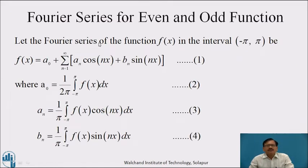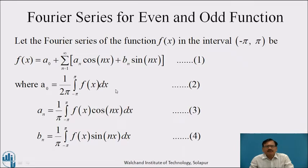Fourier series of even and odd functions. Let the Fourier series of the function f(x) in the interval minus pi to pi be: f(x) = a₀ + Σ(n=1 to ∞) [aₙ cos nx + bₙ sin nx] — call this equation (1). Where a₀ = (1/2π) ∫₋π^π f(x) dx — equation (2); aₙ = (1/π) ∫₋π^π f(x) cos nx dx — equation (3); and bₙ = (1/π) ∫₋π^π f(x) sin nx dx — equation (4).